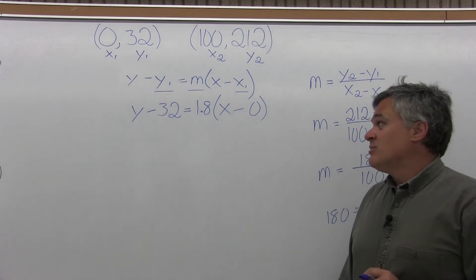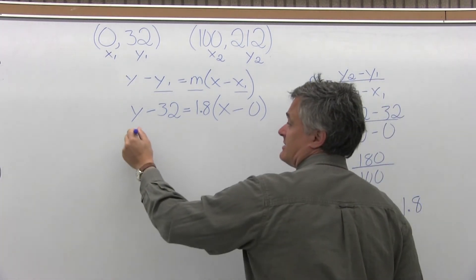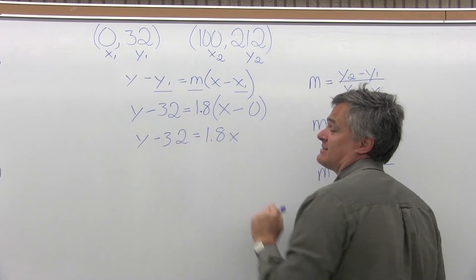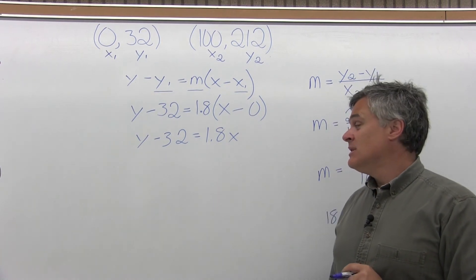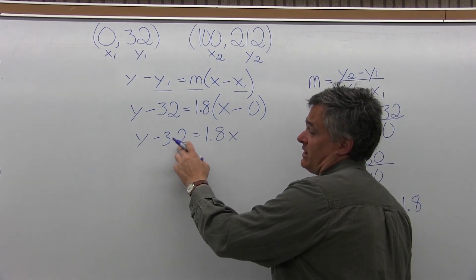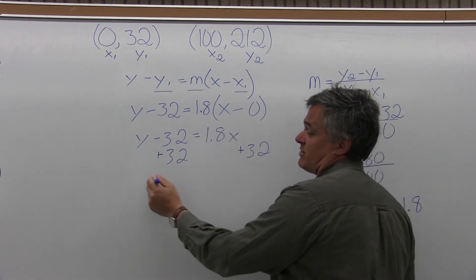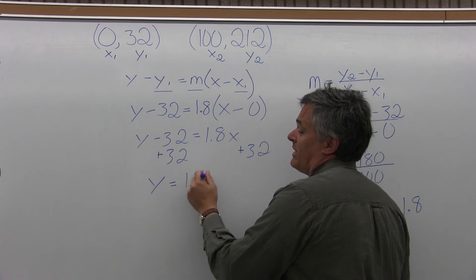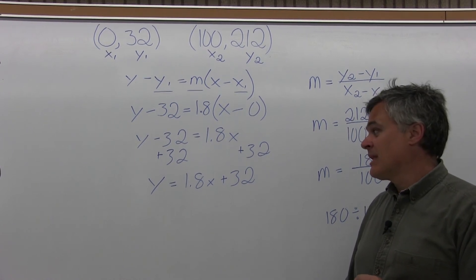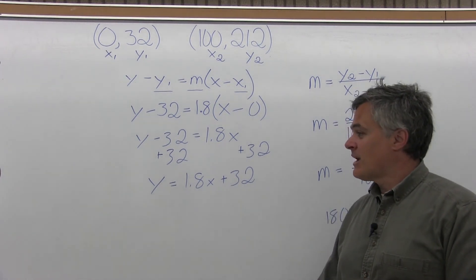I can simplify fairly easily. The x minus 0 can just be written as x, so y minus 32 equals 1.8x. Then I can add 32 to both sides — it cancels on the left and shows up on the right — giving y equals 1.8x plus 32. That puts it in y equals mx plus b form, which I don't really need to find the equivalent of 68 degrees Fahrenheit, but it's a clean result.